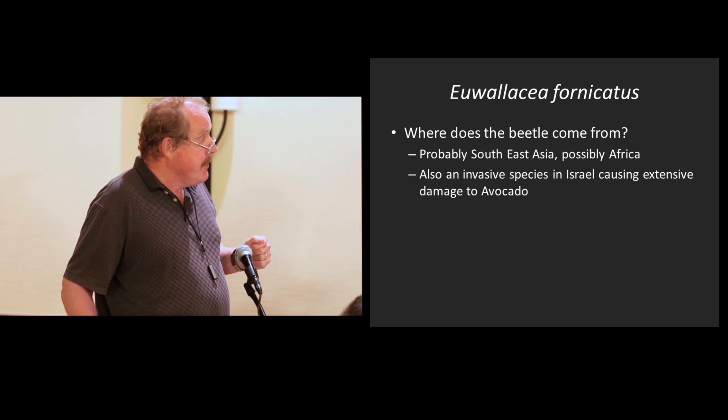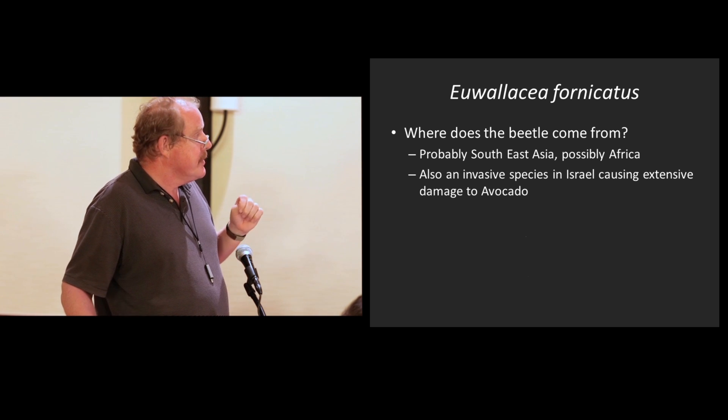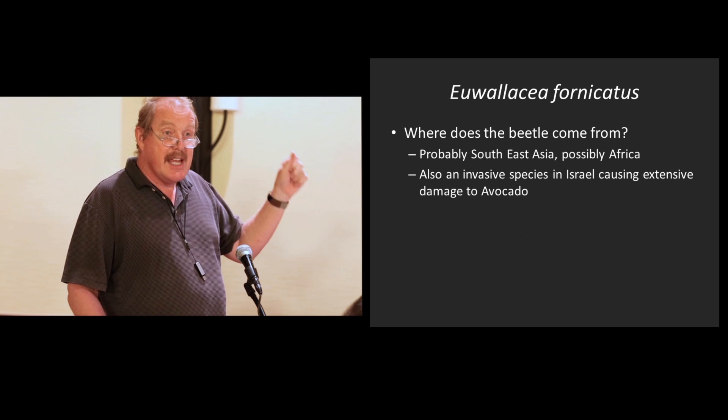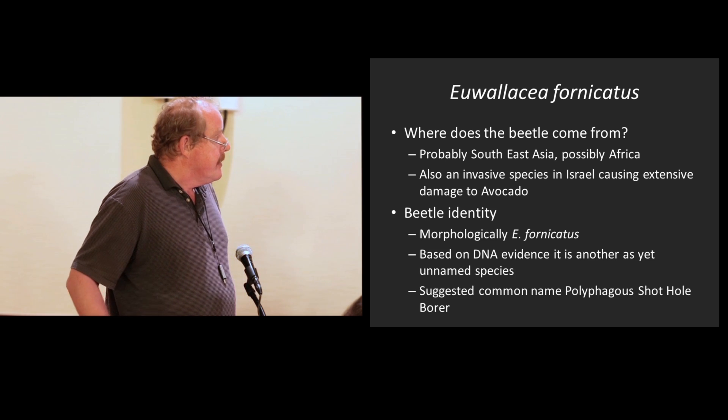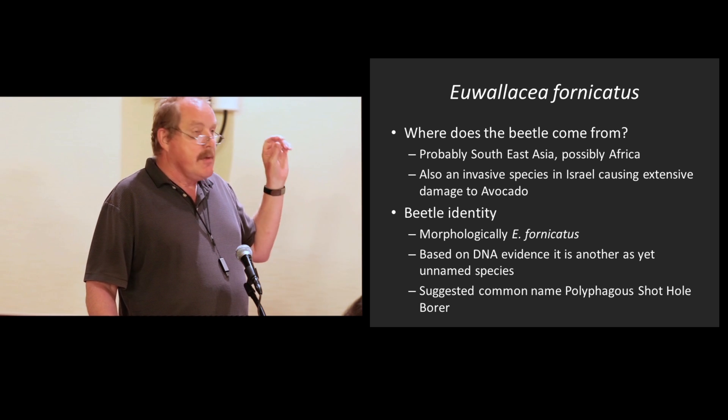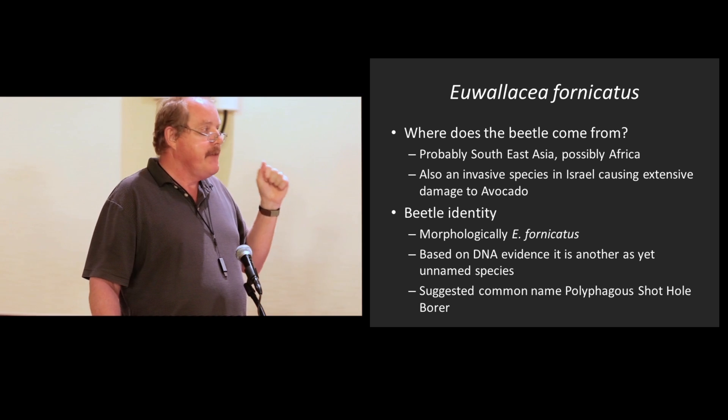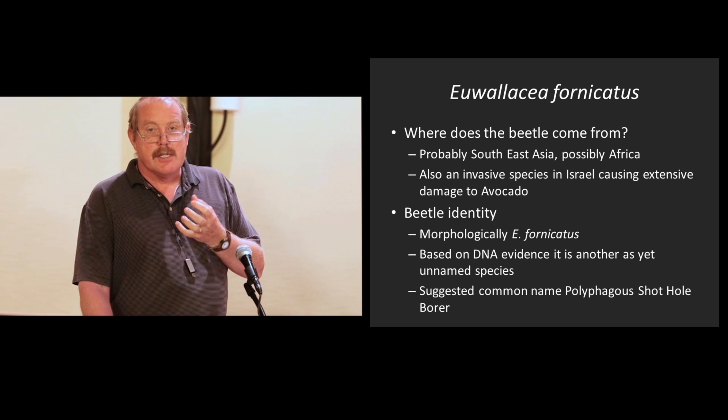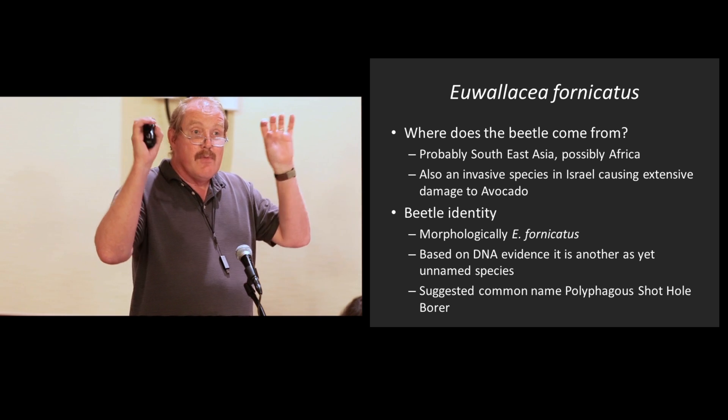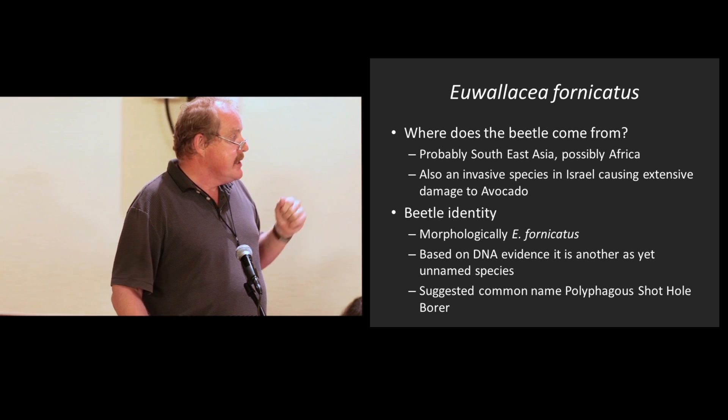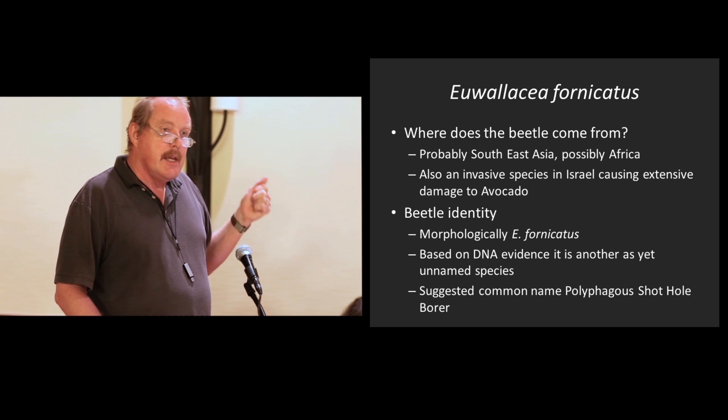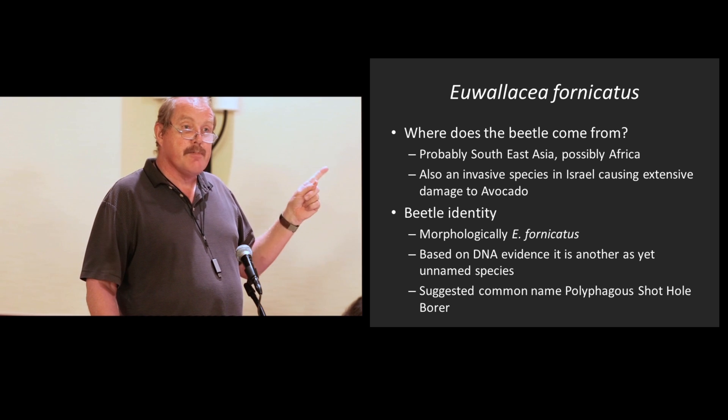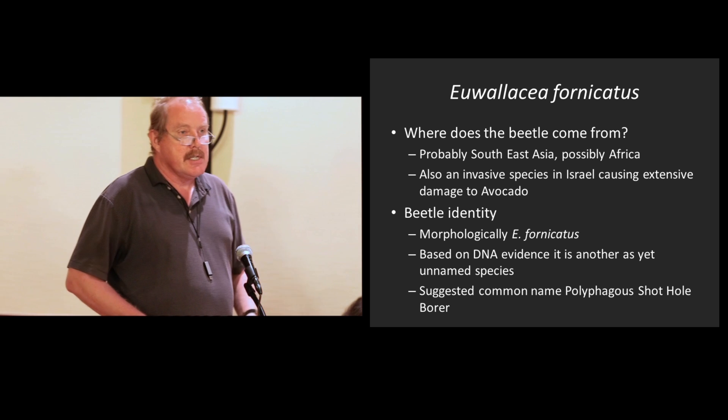Where does this thing come from? It probably comes from Southeast Asia, possibly Africa as we learned in this meeting. In Israel, they have the very same species that is causing extensive damage to avocado. And what do we know about the beetle identity? Well, morphologically, if you look at the external features, it will key out to be Euwallacea fornicatus. We've done a bunch of DNA work on this thing, and it appears that it's quite different from the thing we think is Euwallacea fornicatus. So we think it is a new species. And we've suggested the common name, polyphagous shot hole borer, for this particular beetle. And the official scientific name needs to still be worked out.